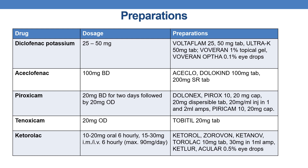The next is diclofenac potassium. The dose is 25–50 mg. Marketed preparations are Voltaflame in 25 and 50 mg tablets, Ultra K in 50 mg tablets, Voveran 1% topical gel, and Voveran Optha as 0.1% eye drops. The next drug is aceclofenac. The dose is 100 mg twice a day. Marketed preparations are Acylo and Dolokind available in 100 mg and 200 mg sustained release tablets.